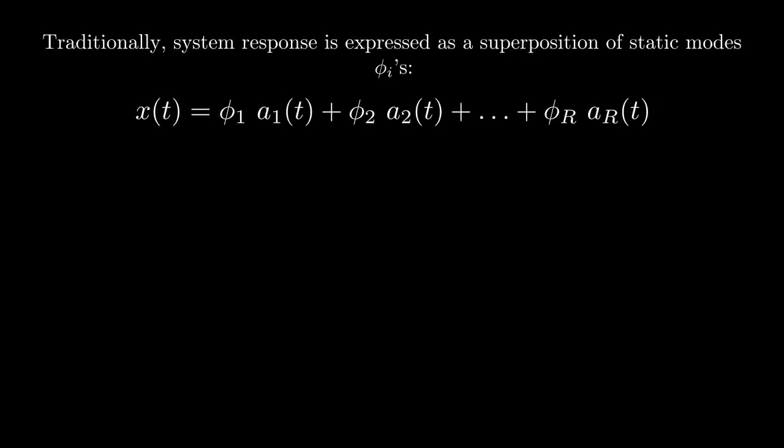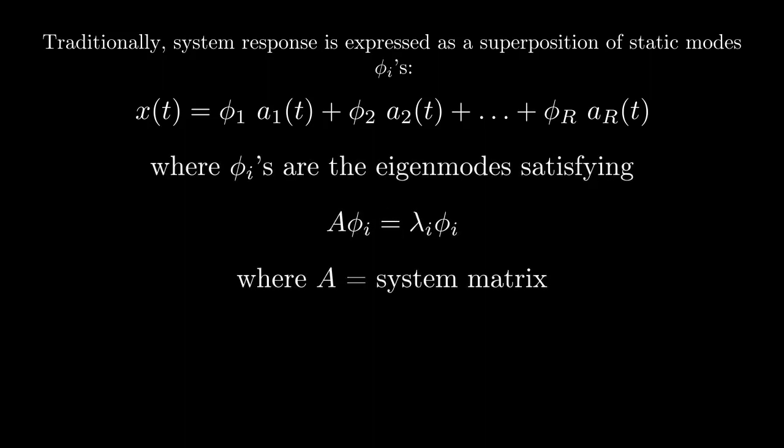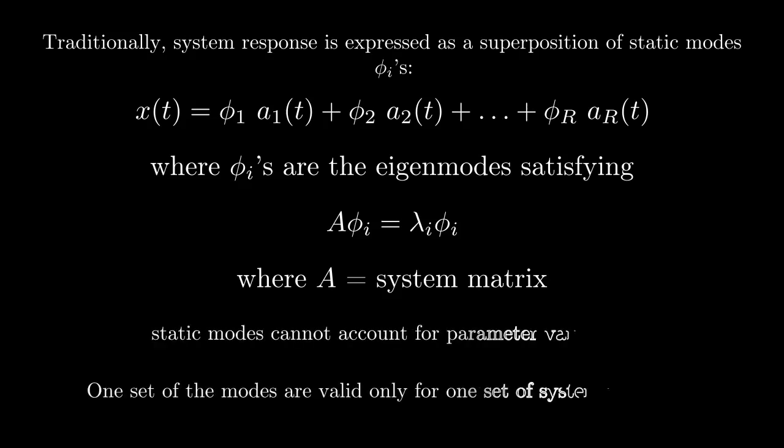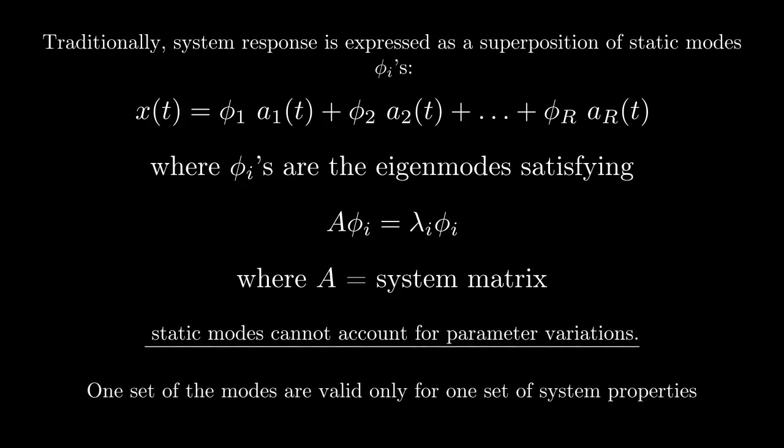Traditionally, a system response can be expressed as a superposition of static modes given by the traditional eigenvalue problem A phi equals lambda phi, where A is a system matrix describing system dynamics. The problem with this method is that phi cannot account for parameter variations, so if A changes, we will need to re-solve and find new eigenvectors which can describe those new parameters.